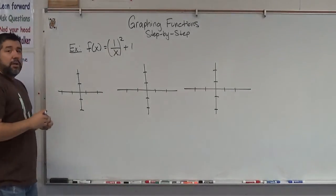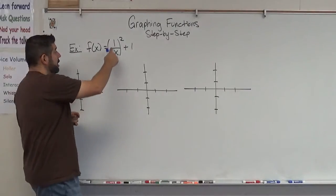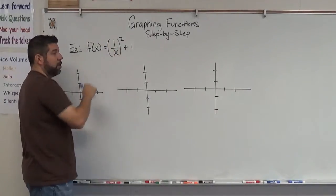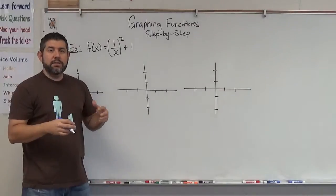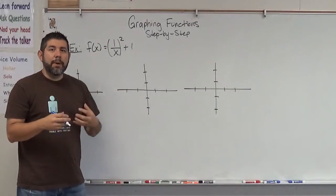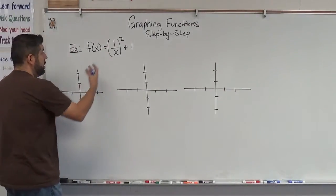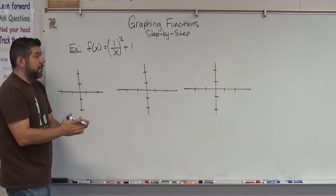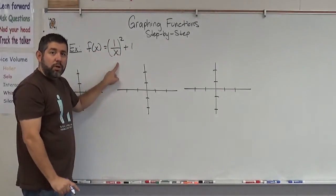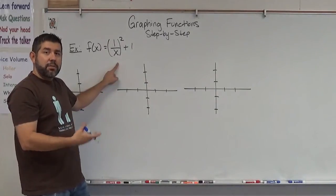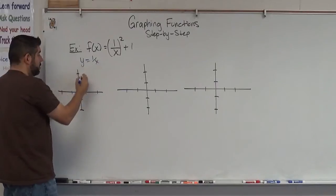What I'm going to do is always take the inside function. The inside function in this case is 1 over x. This is like decomposing the function — it's basically a composite function that I'm graphing. So if I decompose this and take the inside function, I get what's inside the parentheses, which is 1 over x. That is my parent function, my base function. So I'm going to graph y equals 1 over x.